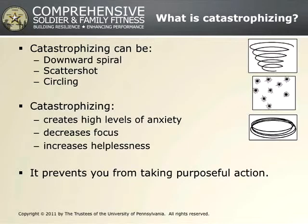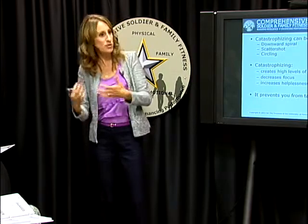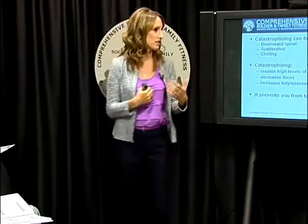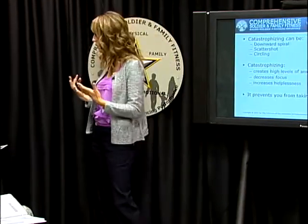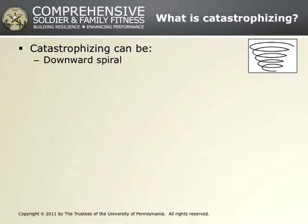There are three different styles of catastrophic thinking, and I'm going to go through each one. As we go through them, I want you to think about which style you lean towards — some of you will find that one of these three styles really matches the way you catastrophize when you fall into this style of thinking. We'll also talk about what they do to your body and your attention. The first one is called 'downward spiral.'